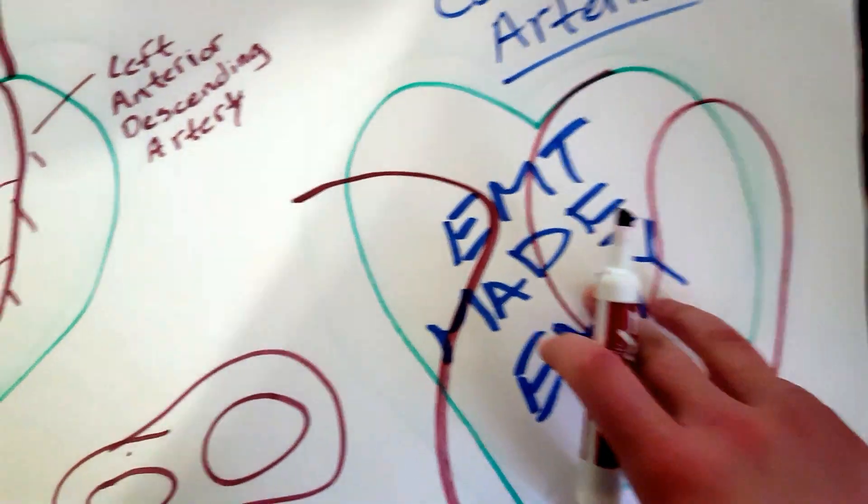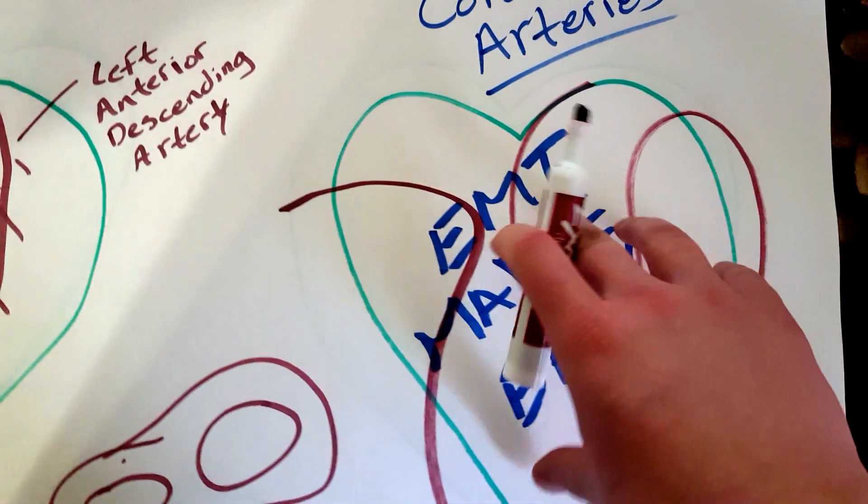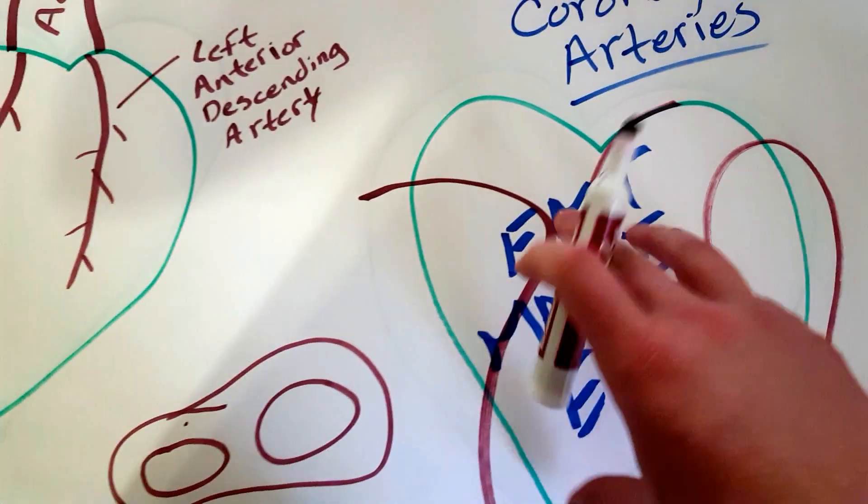There are vessels that actually feed your heart with O2 and they're called coronary arteries.